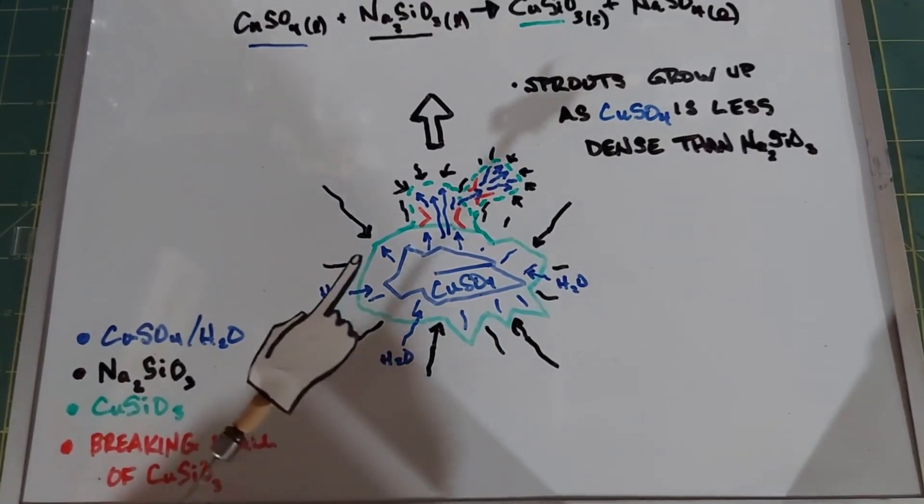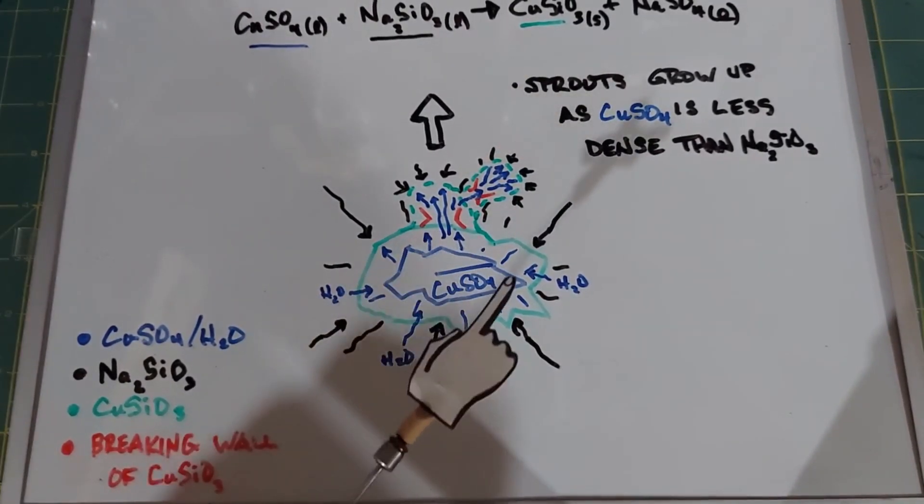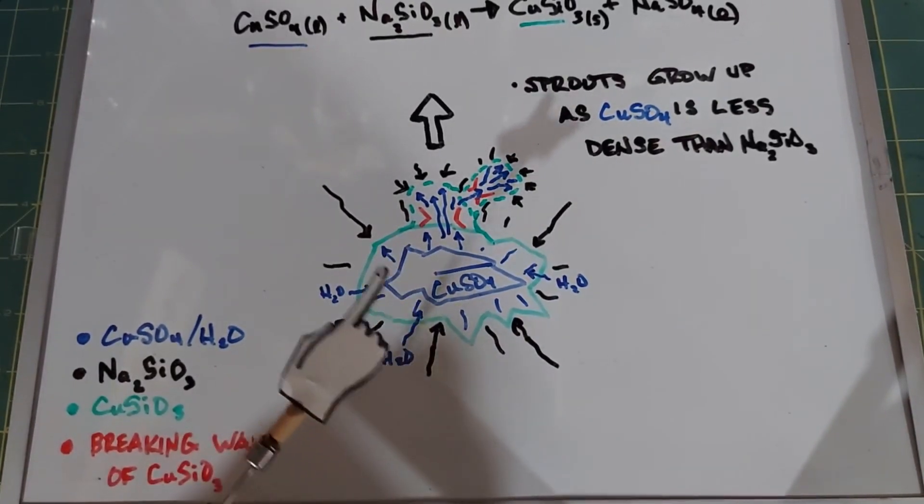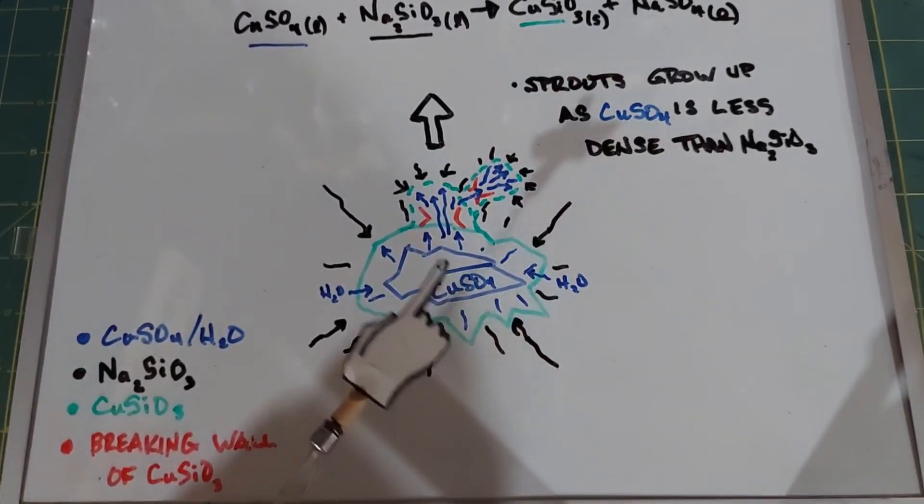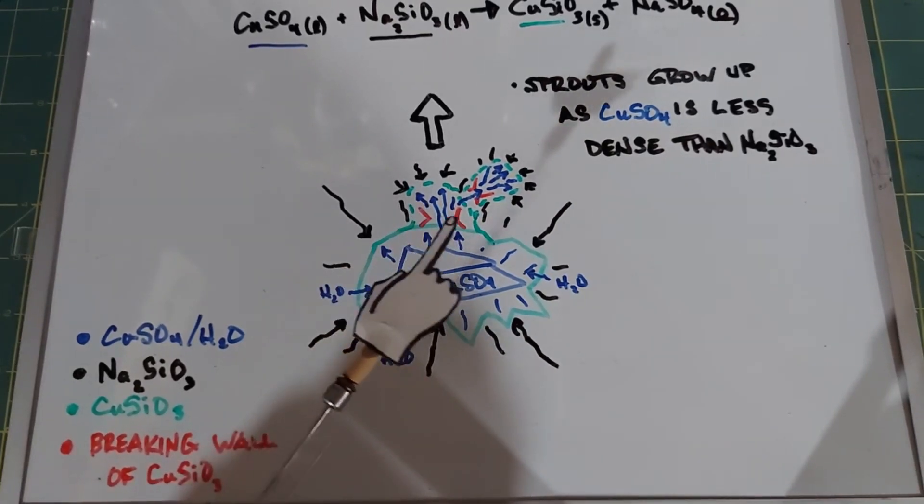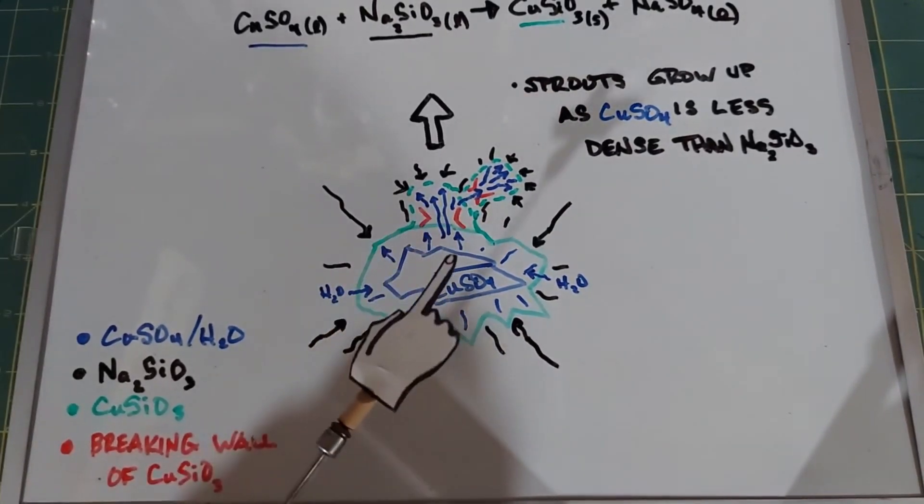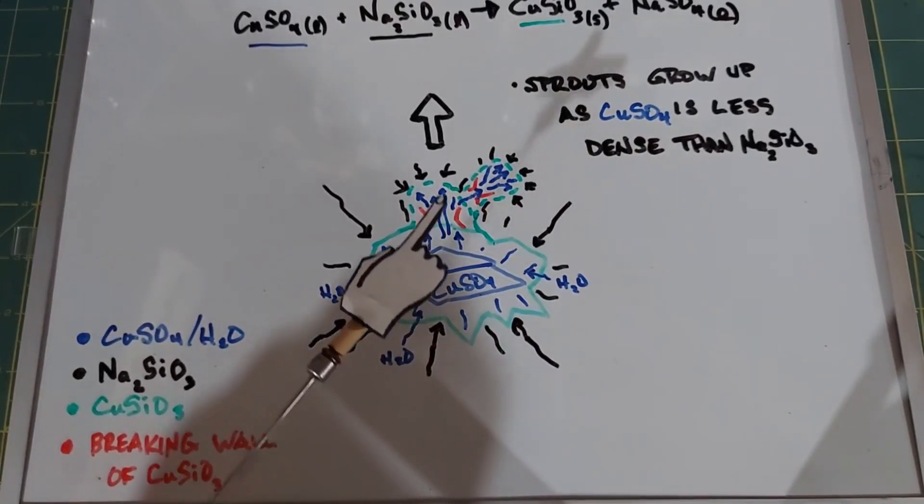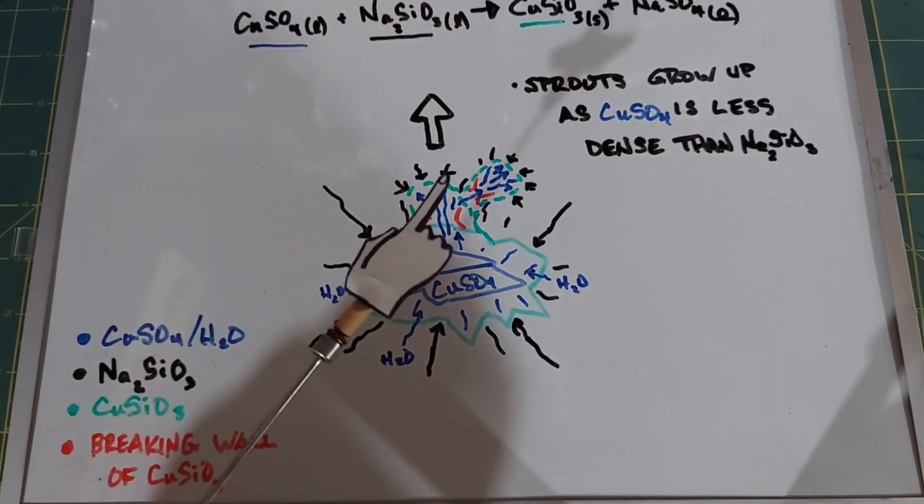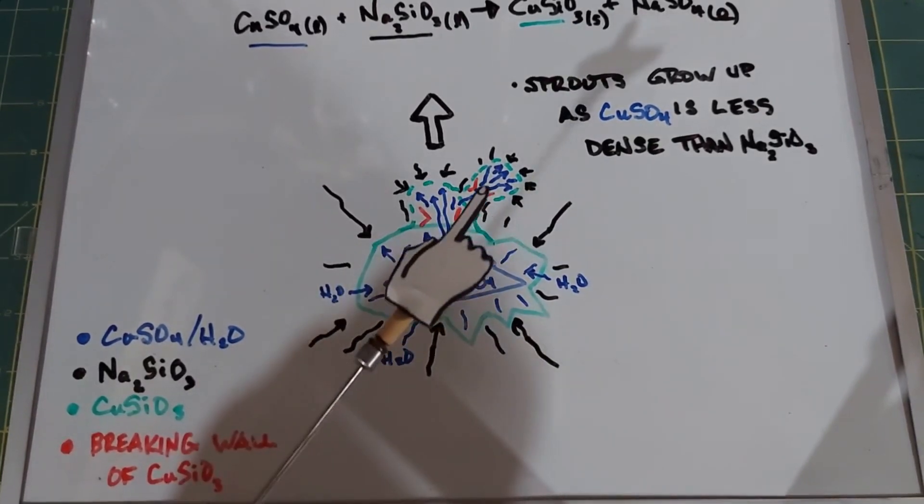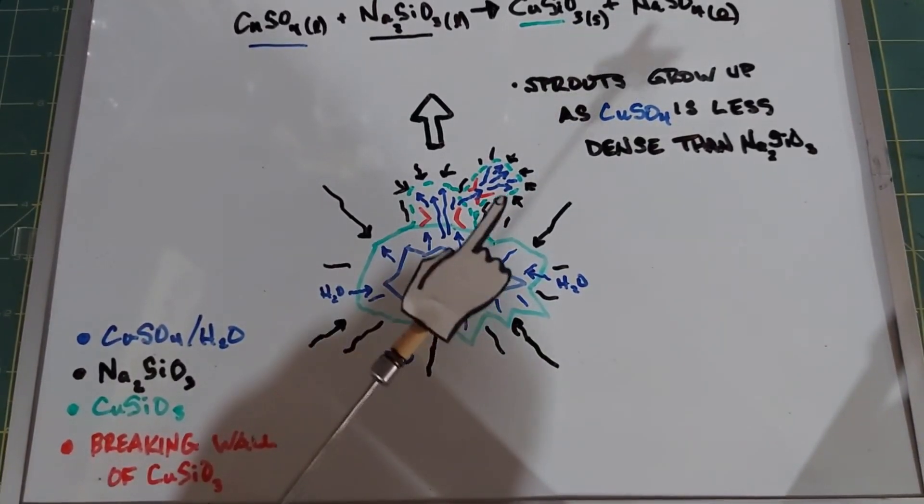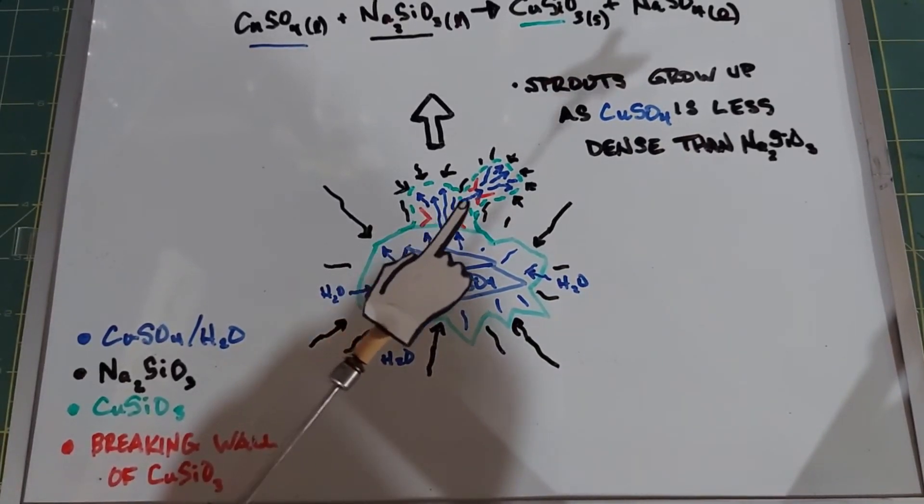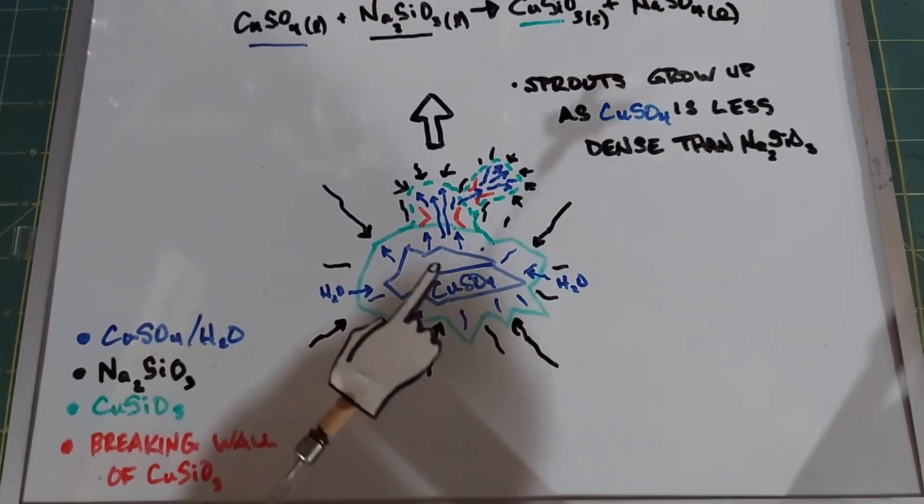Semi-permeability allows water to leak through back into the inside of here and because this is a solid all the way around it and water is leaking into it, eventually pressure builds up inside of here and the wall breaks open. So the copper silicate wall breaks open and when that happens it releases fresh copper sulfate solution which leaks through and then it bumps into the sodium silicate and forms another wall of copper silicate.